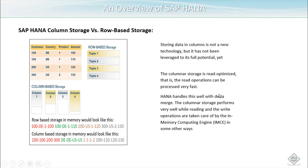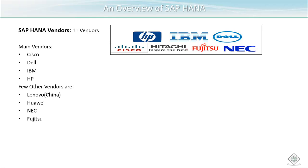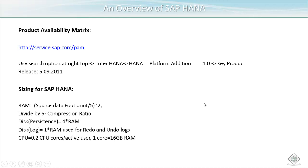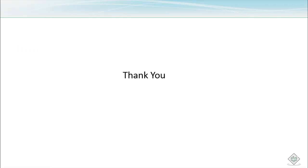These are the SAP HANA vendors. There are 11 vendors for SAP HANA hardware, including Cisco, Dell, IBM, HP, Lenovo, Huawei, NEC, and Fujitsu. SAP HANA hardware is much more powerful compared to other traditional databases. You can go to service.sap.com and check the Product Availability Matrix (PAM) for details. A typical sizing for SAP HANA includes RAM, compression ratio, disk, log, and CPU.